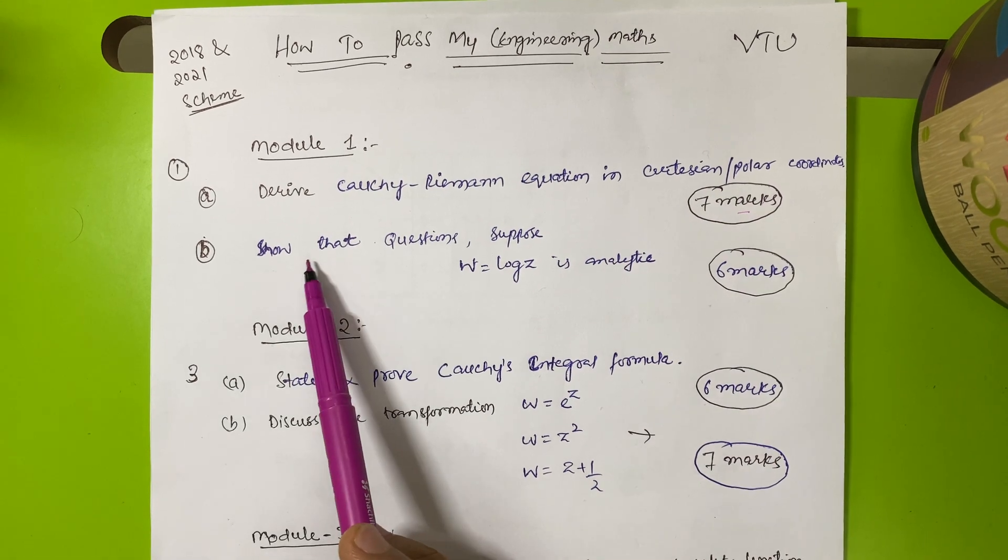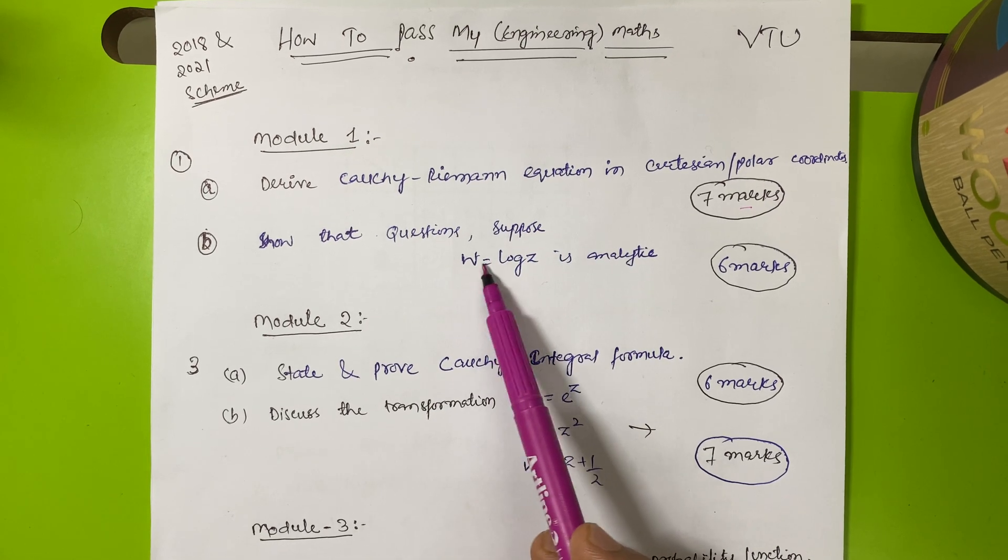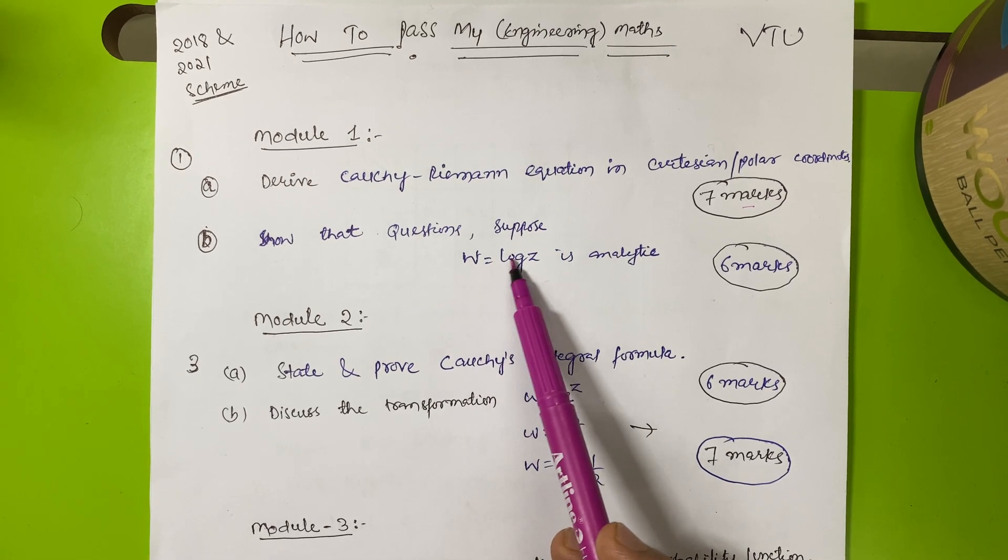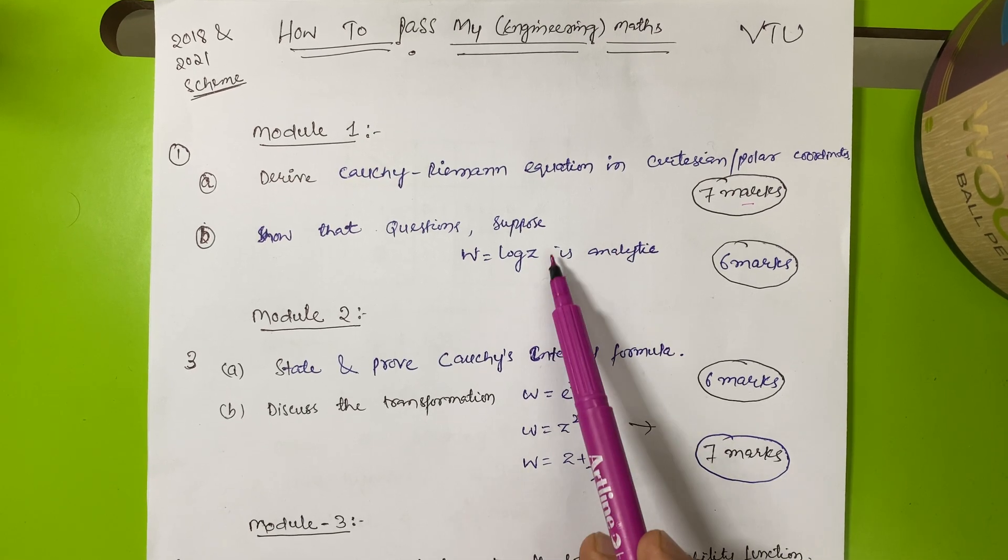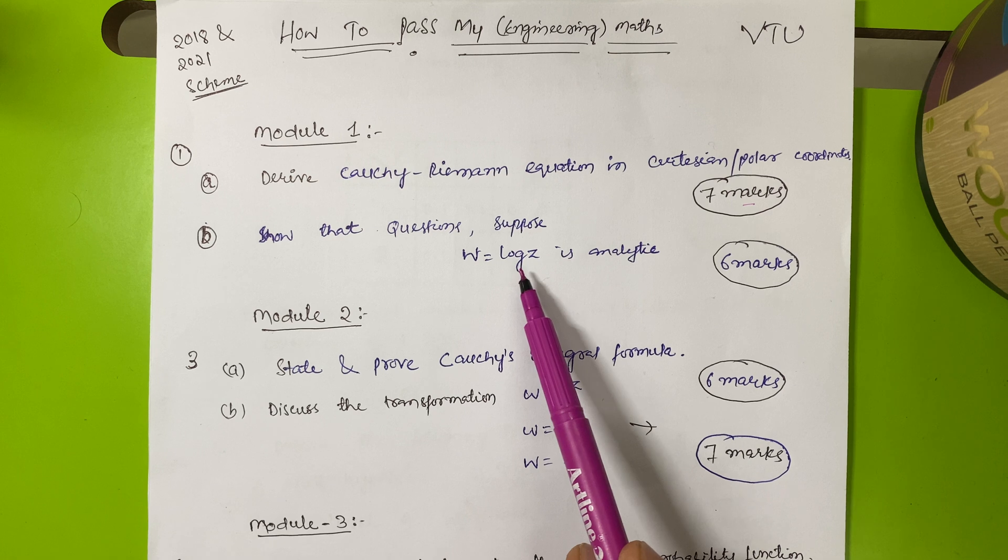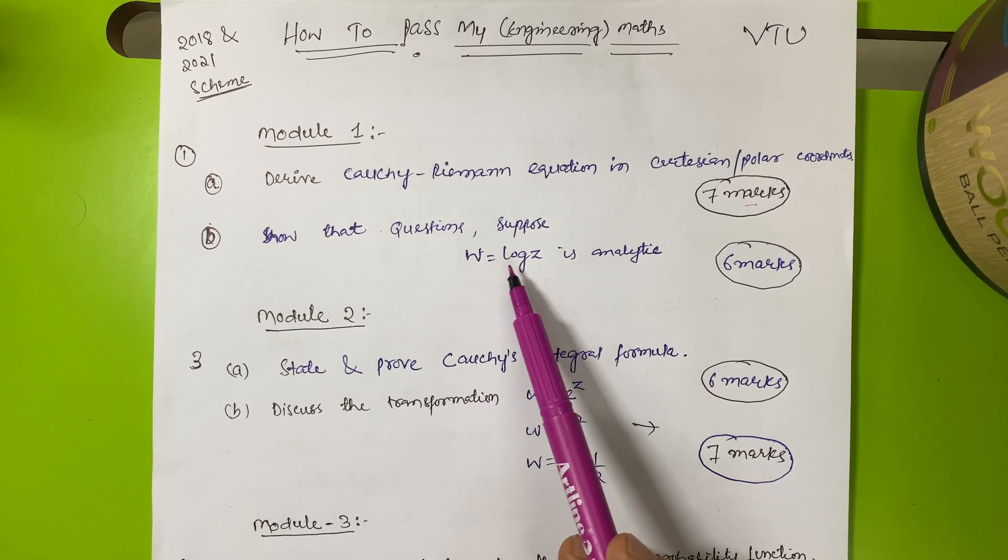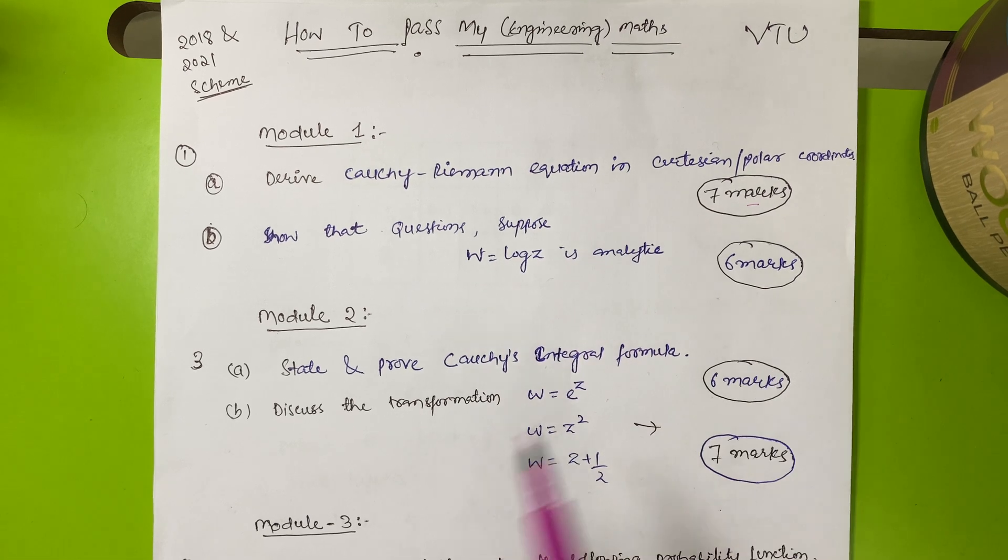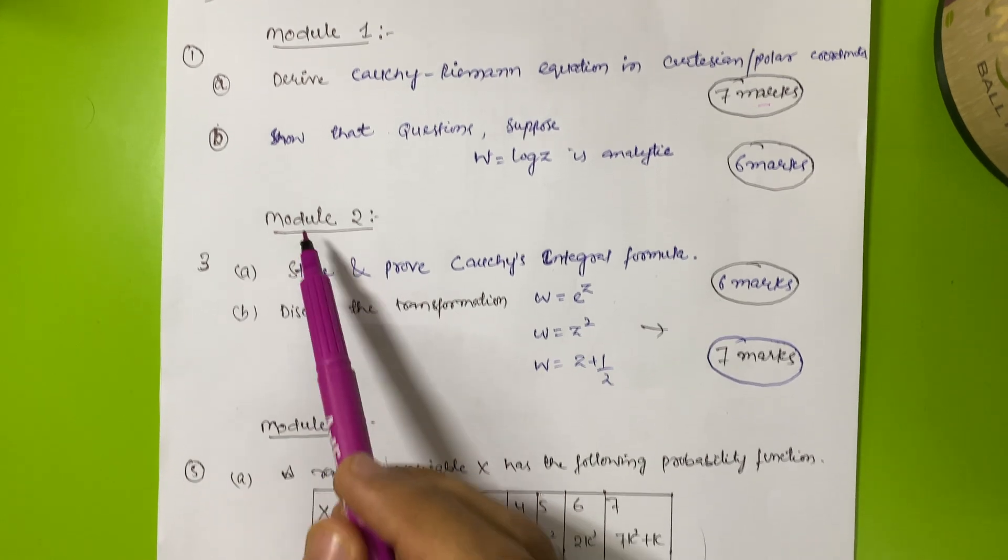Then show that questions will come. For example, w equals log of z, you have to show this function is analytic. There are four or five functions they may ask you to show that the function is analytic. This case is also six marks. Then module two comes.